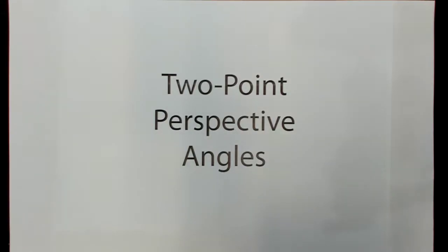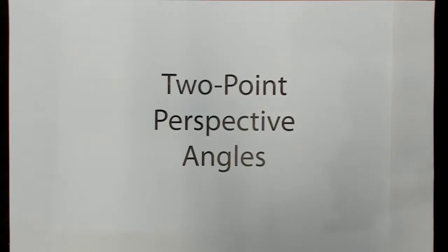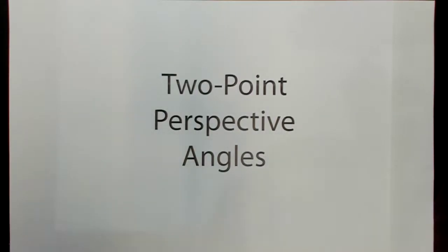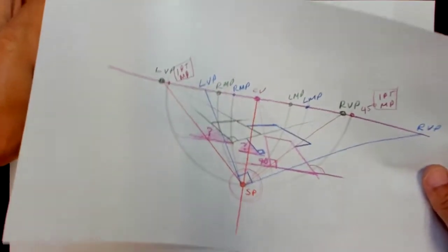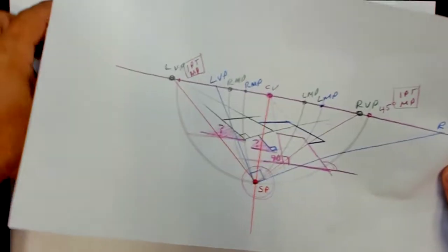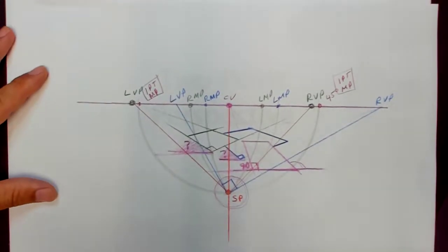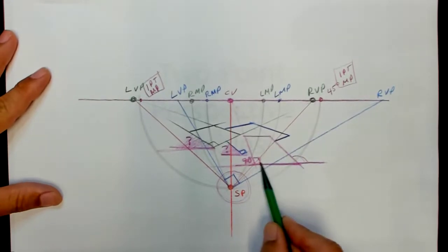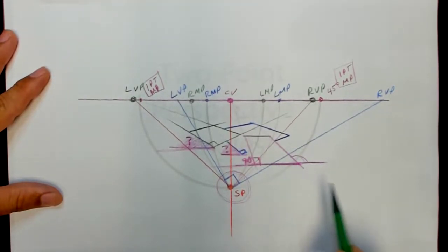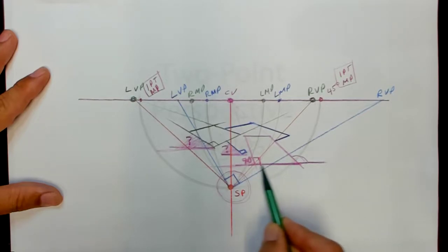Let's talk about two-point perspective angles. In one-point perspective, an object is only at one angle — it is at a 90-degree angle to the picture plane. In two-point perspective, you can have all kinds of different angles. Here's a one-point perspective rectangle that has a 90-degree angle to the picture plane.